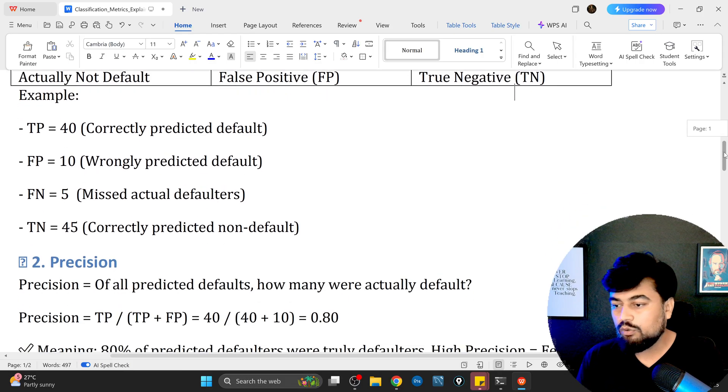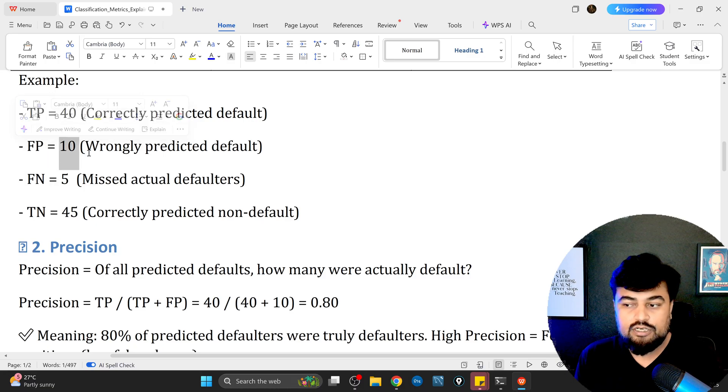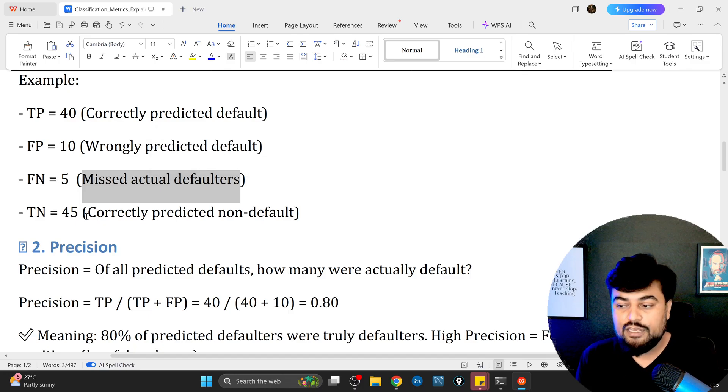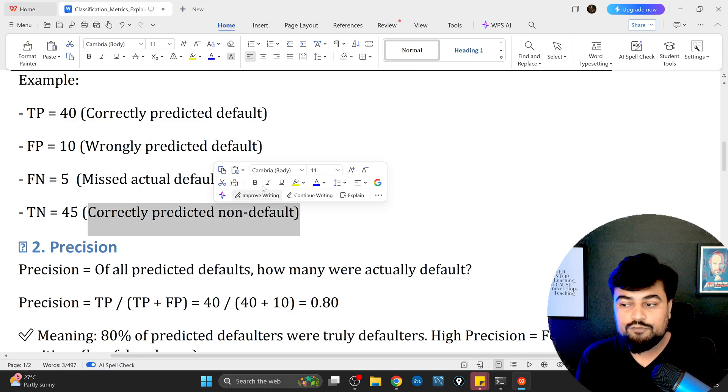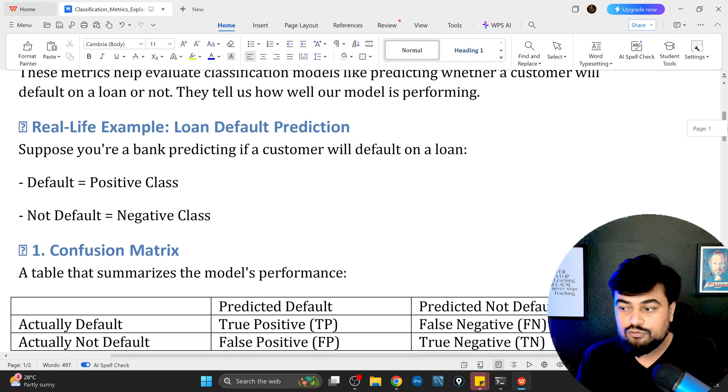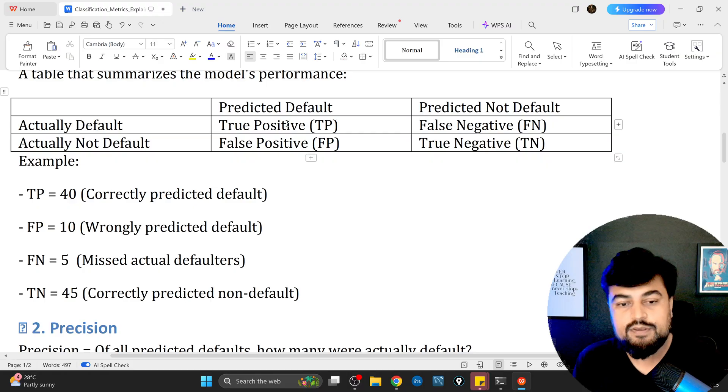Let's say you assume there are 40 true positive cases, 10 false positive which is wrongly predicted default, 5 are missed actual defaulters, and 45 were correctly predicted non-default. That is the overall confusion matrix. When you create a confusion matrix you calculate the value of TP, FN, FP, and TN.